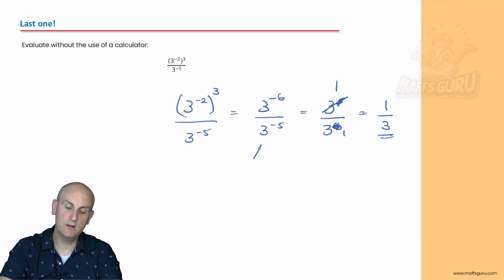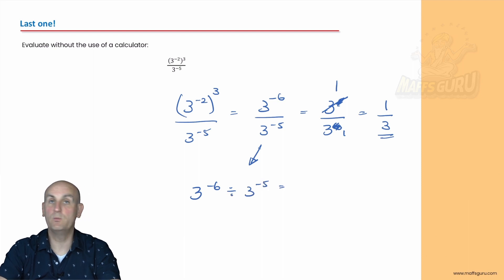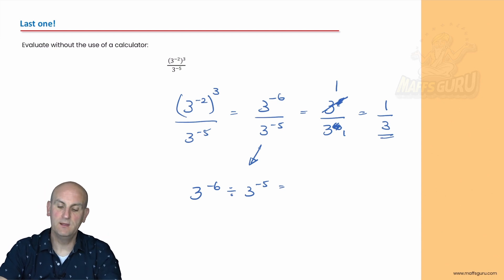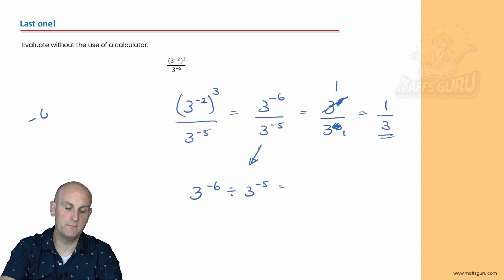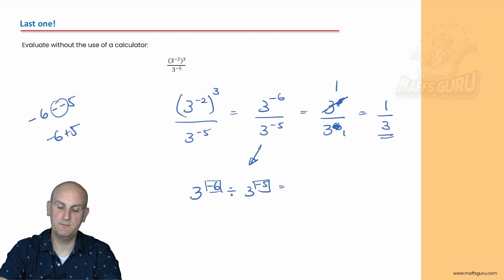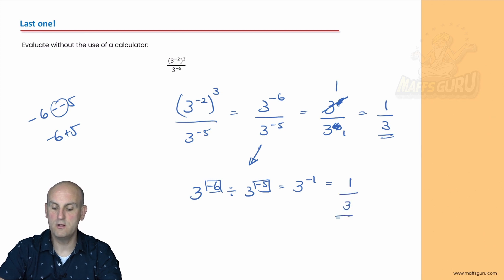Another way: we can rewrite this as three to the minus six divided by three to the minus five. When you divide, you subtract the powers. We now have minus six minus minus five — subtracting those powers gives minus six plus five which is minus one. So three to the power of minus one, and we know that becomes one on three.